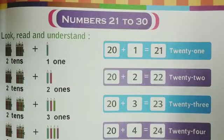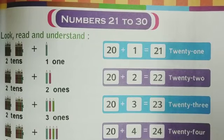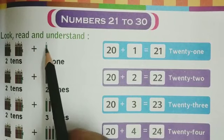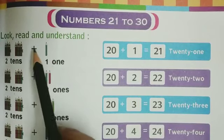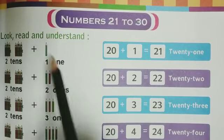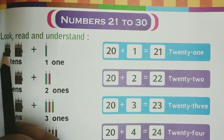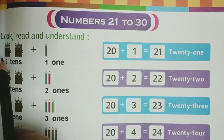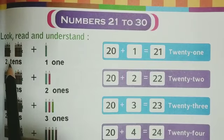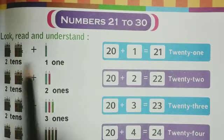Hello my dear kids, I hope you all are fine. Our today's math topic is numbers named from 21 to 30. This is page number 27 — look, read and understand. One pencil means one object. One ten means a group of ten objects, and two tens means a group of 20 objects.